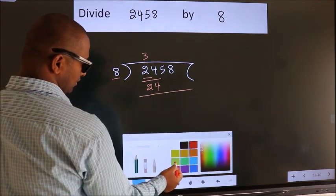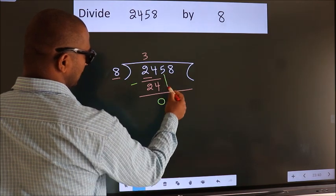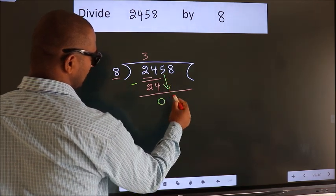Now we should subtract. We get 0. After this, bring down the next number. So 5 down.